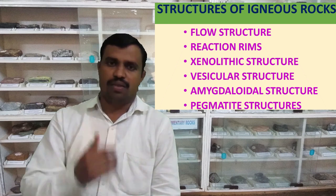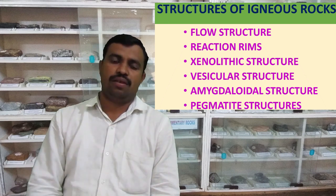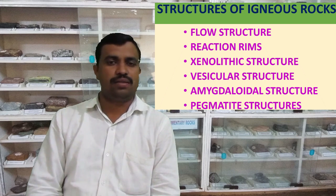So there are different structures. We will see first, that is the flow structure. As you can see in the side figure, when any igneous rock consists of parallel or subparallel bands or streaks of magma flow, then such type of structure is called as flow structure.